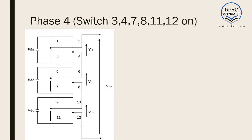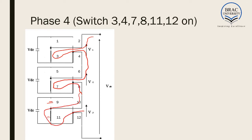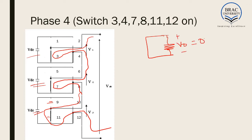Phase 4 is again similar to phase 3, but in this case switch number 9 is open and switch 11 is closed. Then the current path is such that in no case does current flow through any VDC source. As a result, the output is generally short-circuited and there is no voltage source in the path of the output, so V output is equal to 0V.